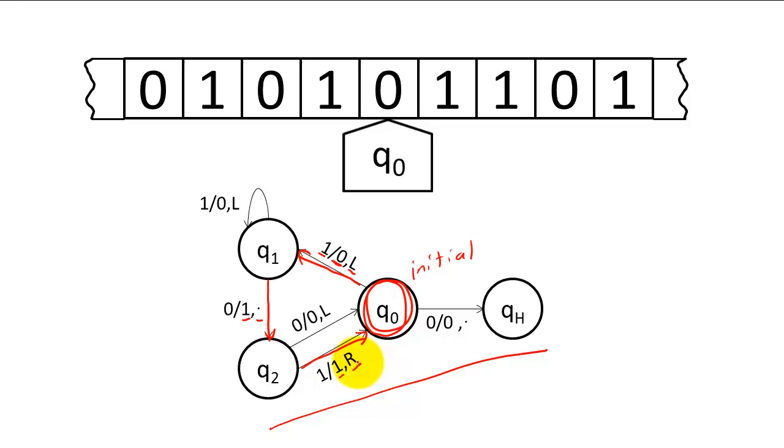Finally, since our state is the initial state and our current cell's value is 0, we transition to the halting state, change the value in the cell to 0, and keep the head in the same place.